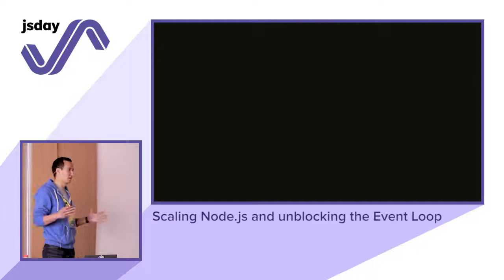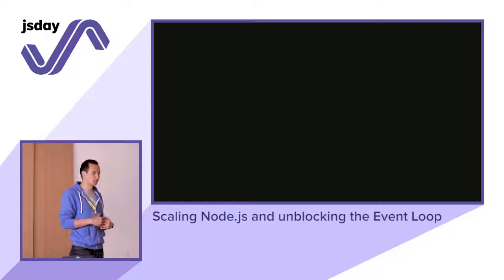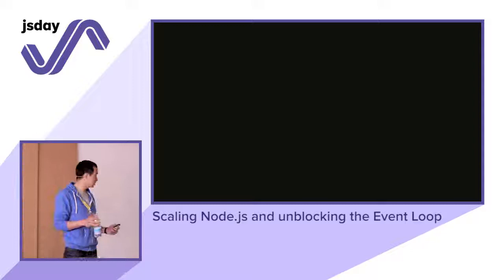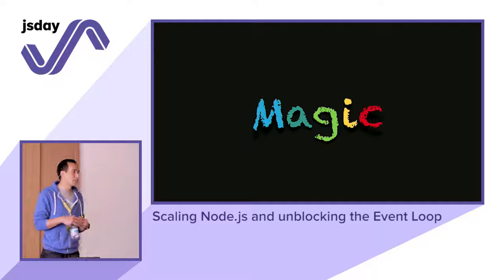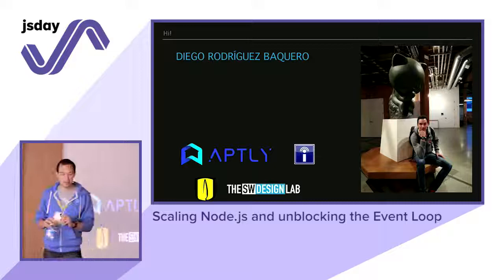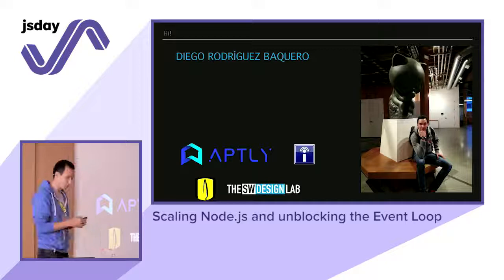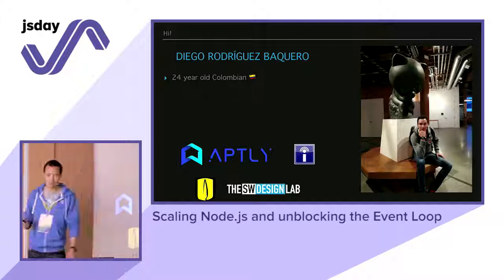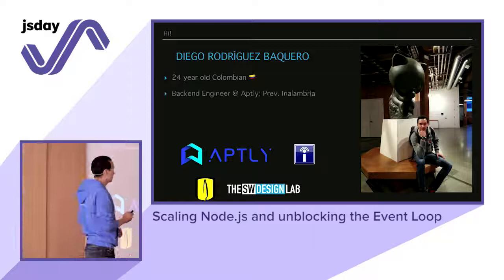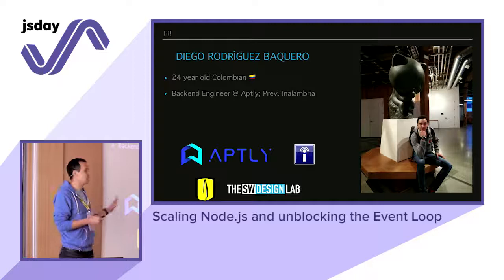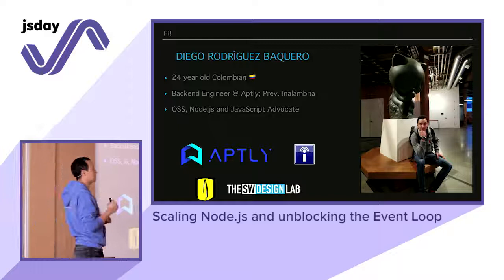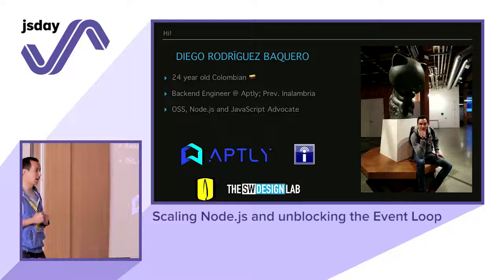I wanted to get back to those early stages when I first saw WebTorrent — it was magic. I want more of this magic to be available to everyone. I'm a 24-year-old Colombian who took a long trip to talk for the second time in his life here in Italy, which I hadn't visited and it's amazing. I'm a backend engineer at Aptly — I switched two weeks ago.